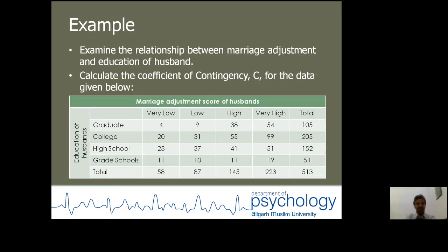Now discussing a real-time example: a researcher is interested in examining the relationship between marriage adjustment and education of husband. Calculate the coefficient of contingency for the data given below. The education of the husband has four categories, and the marriage adjustment score of the husband is also divided into four categories. The values given in each cell are frequencies.